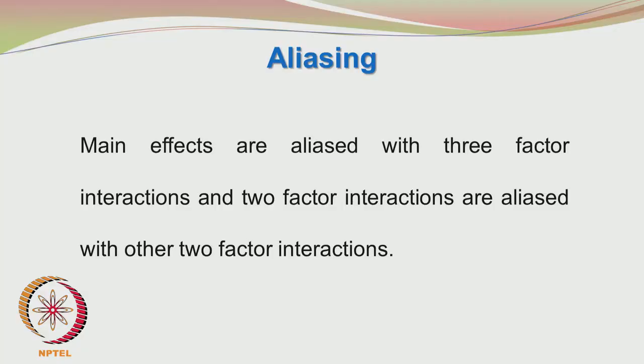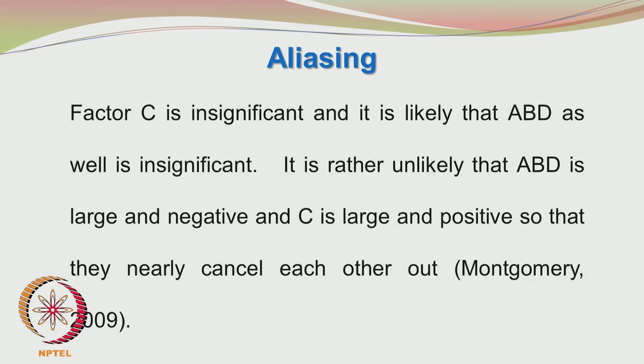Montgomery also says that usually the simple explanation — that both C and ABD are insignificant — is usually the correct explanation, even though you can find some special or extreme cases where this may not apply. So the net effect is: if factor C is found to be insignificant from the fractional factorial design, the factor aliased with it — here it is ABD — may also be deemed insignificant. But we never know whether that is a correct assumption until we carry out the second fraction also.